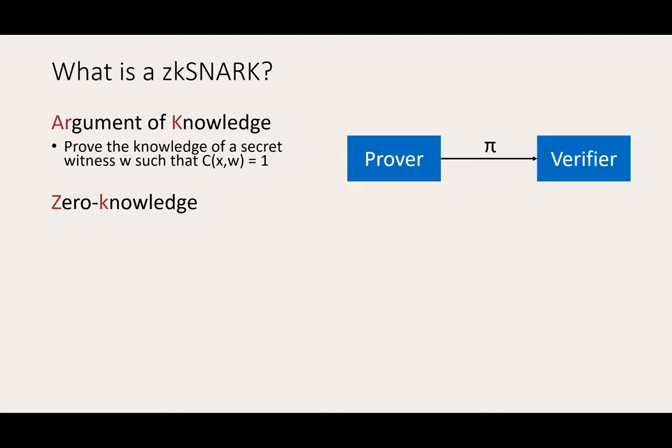Additionally, it's a zero-knowledge argument, meaning that the proof does not reveal anything about the witness beyond what is implied by the statement. A ZK-SNARK is also non-interactive, meaning that the prover can produce its proof without interacting with a verifier.